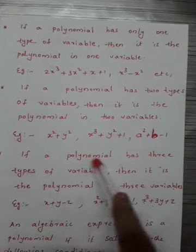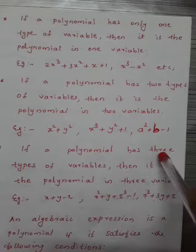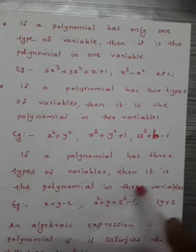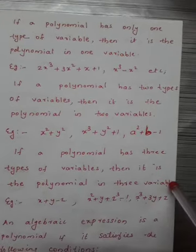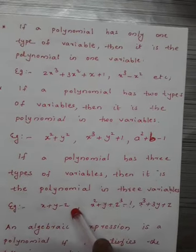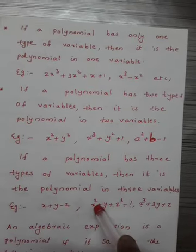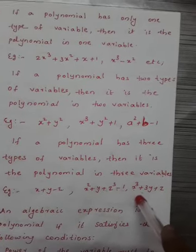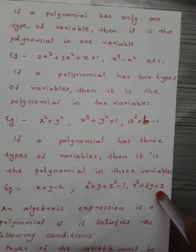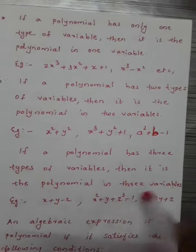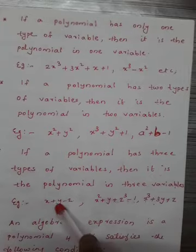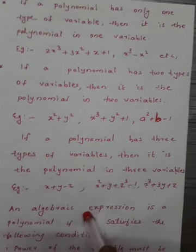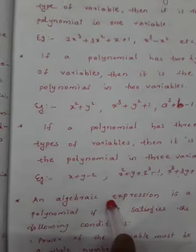If a polynomial has three types of variables, then it is the polynomial in three variables. For example, x + y - z, x² + y + z³ - 1, x³ + 3y + z. In these expressions there are three types of variables. This is a very important point.